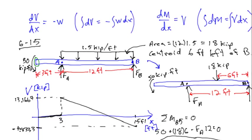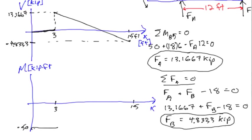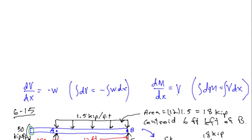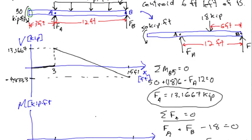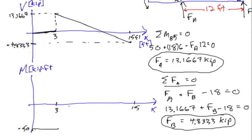When we get out to point A, there's a jump in the slope of M, not in the value. The slope of M versus X equals V, and V jumps up to 13.1667, so the slope jumps up steeply. Then as V gradually decreases, the slope decreases too, giving a curve. It peaks somewhere, then the bending moment must come back to zero at the end of the beam since there are no applied couples causing jumps.